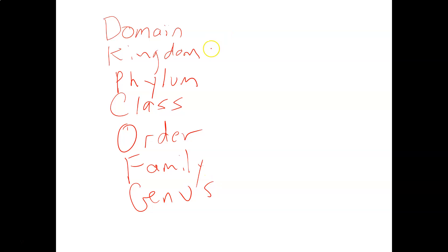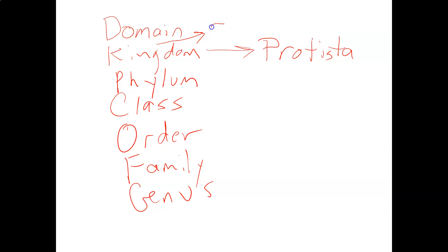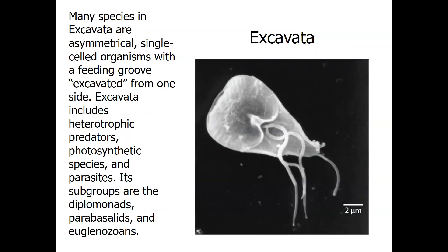The protozoans are in the Kingdom Protista — all the organisms we're learning about are in the Kingdom Protista. The problem is that they're not classified like other organisms. Because there's such variety among the protozoans and the algae, and because they are either animal-like, plant-like, fungus-like, or a mixture, they're grouped into supergroups. Supergroups are in the middle of the classification hierarchy, and we only use them when discussing protozoans.